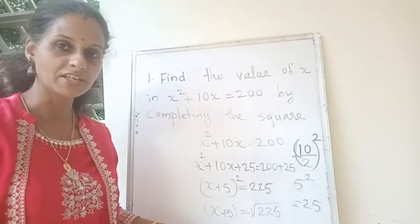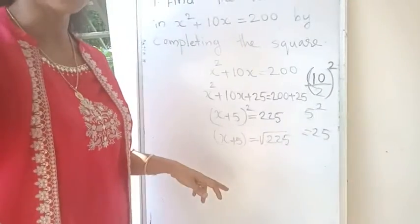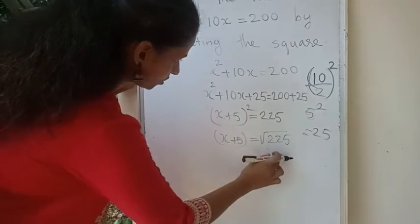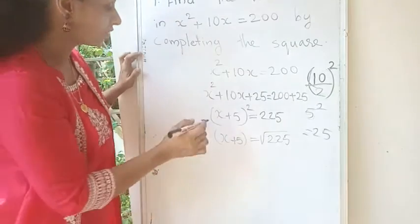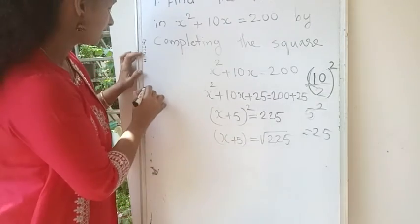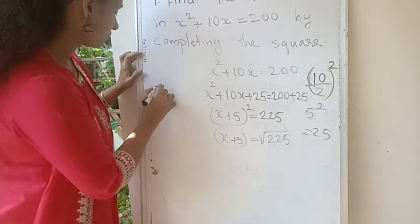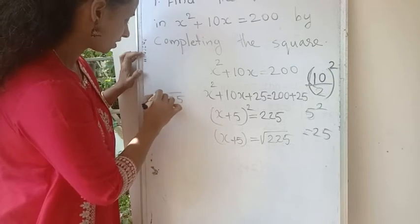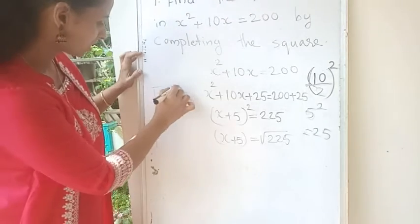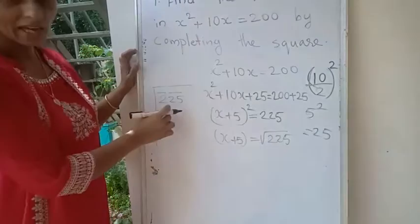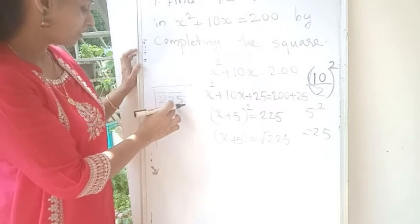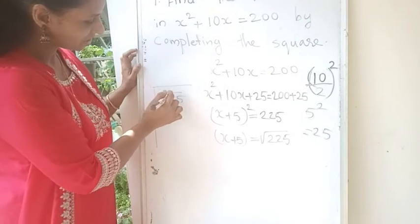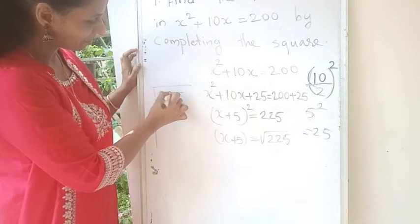Root 225 — we have to take the root of this 225. To find the square root, we have to split the number: we pair the digits as 2 and 25. From this side, we pair the numbers — we get the pair 25 and the pair 2.